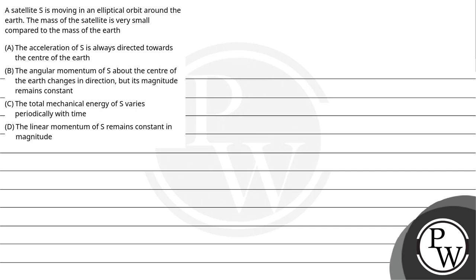Hello everyone, let's read the question. A satellite S is moving in an elliptical orbit around the earth. The mass of the satellite is very small as compared to the mass of the earth. Option A: the acceleration of S is always directed towards the center of the earth. Option B: the angular momentum of S about the center of earth changes in direction but its magnitude remains constant. Option C: the total mechanical energy of S varies periodically with time. And option D: the linear momentum of S remains constant in magnitude.